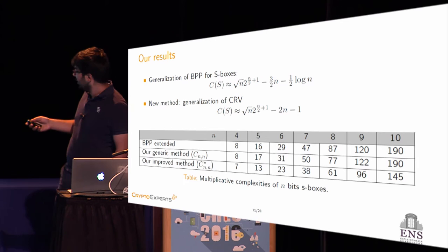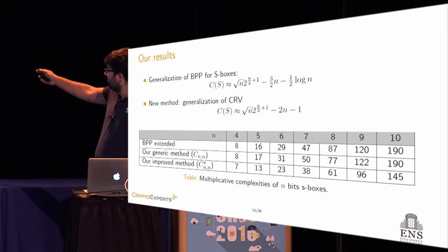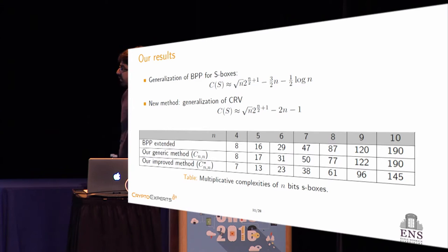We also proposed a new method that is a generalization of the CRV decomposition to get better results. When looking at 8-bit S-boxes, from the extended Boyer et al. result, with our generic method we were able to reduce the multiplicative complexity by 10, and with an improved S-box-dependent method by 16.